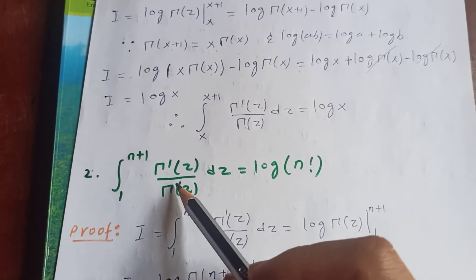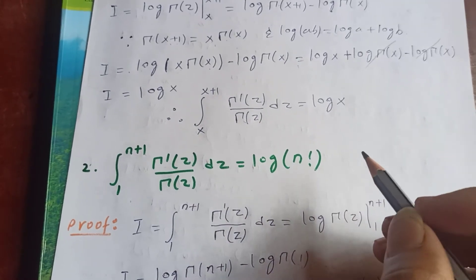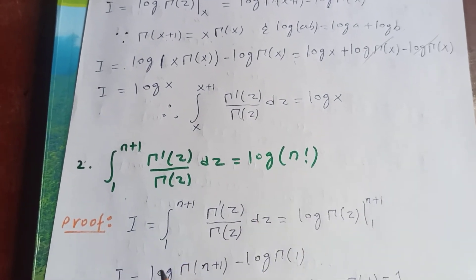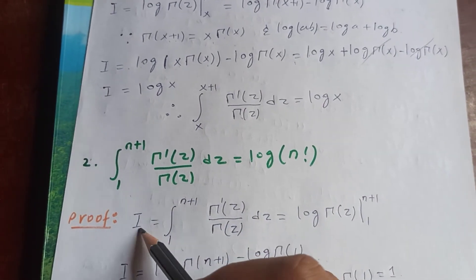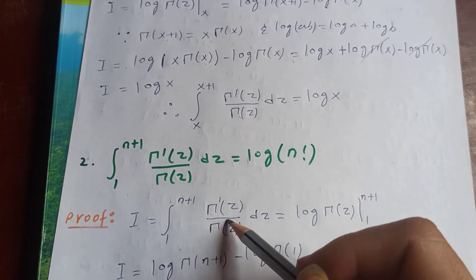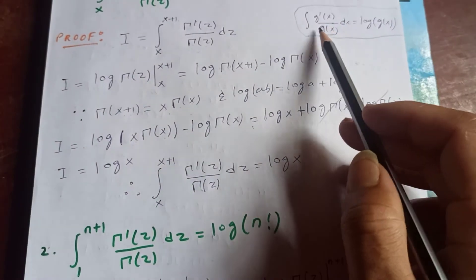Integral from 1 to n plus 1 of gamma prime of z upon gamma z dz is log of n factorial. Now this one, let me put our integral to be I. Integral from 1 to n plus 1, gamma prime of z upon gamma z dz. And we know that applying this theorem here.